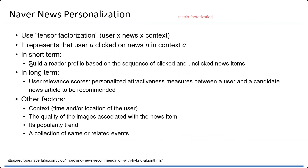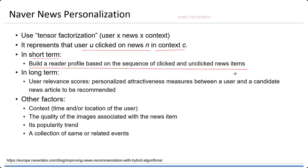In Naver News, they try to represent the user click on the news item in context C. In the short term, they build a reader profile based on the sequence of clicked and unclicked news items. In the long term, there will be some user relevance scores — they can personalize the attractiveness measures between a user and a candidate news article to be recommended.